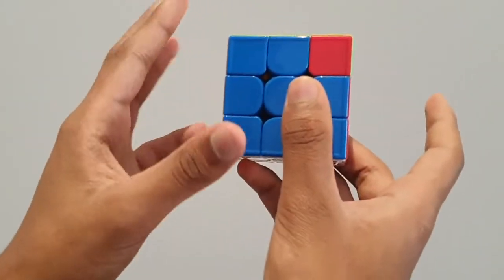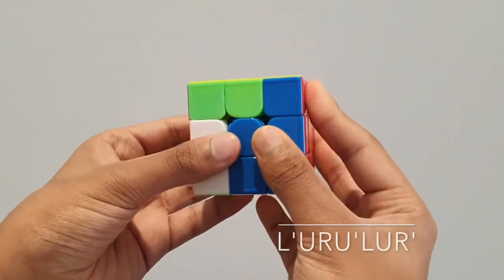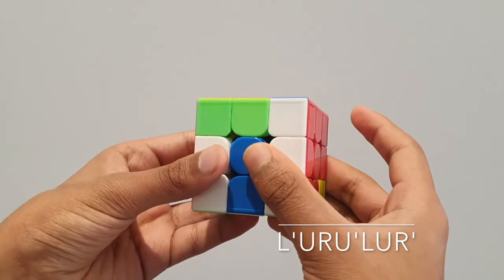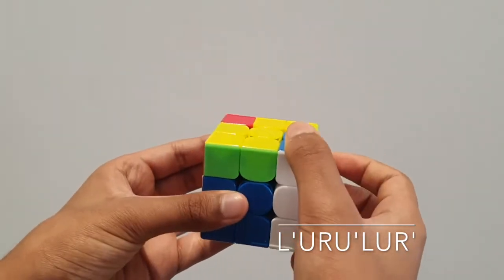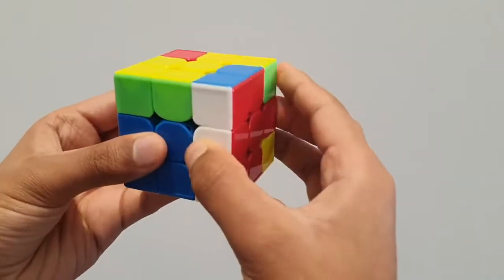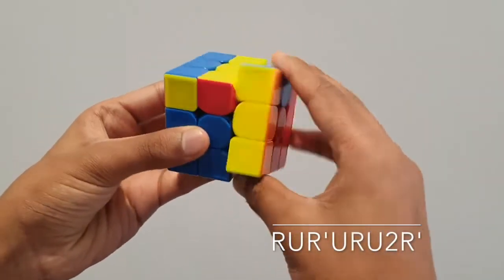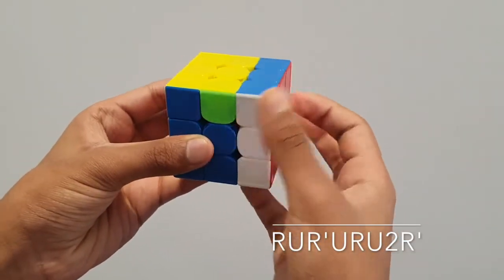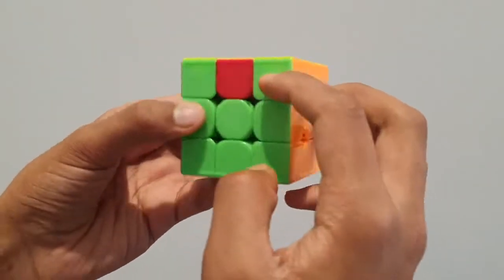Now we do our algorithm once more: L prime U R U prime L U R prime. Now we have a fish: R U R prime U R U2 R prime. Now there it is. That's it. That's our solved corner pieces.